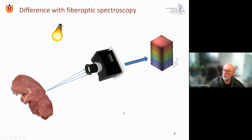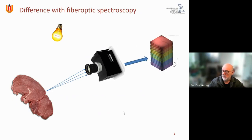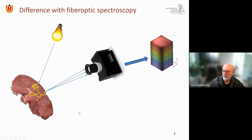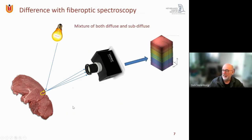Regardless of the camera type, hyperspectral imaging differs fundamentally from fiber optic spectroscopy. When a camera pixel looks at a tissue region, that region receives both diffuse light from all over and sub-diffuse light from very close by — it's a mixture of both. In fiber optic spectroscopy, we can choose the fiber distance, but in hyperspectral imaging we have to deal with this combined sub-diffuse and diffuse contribution.